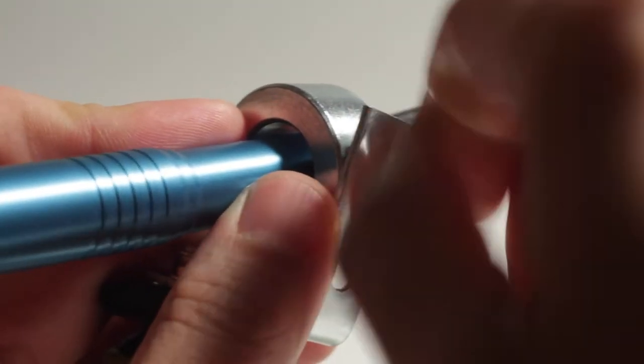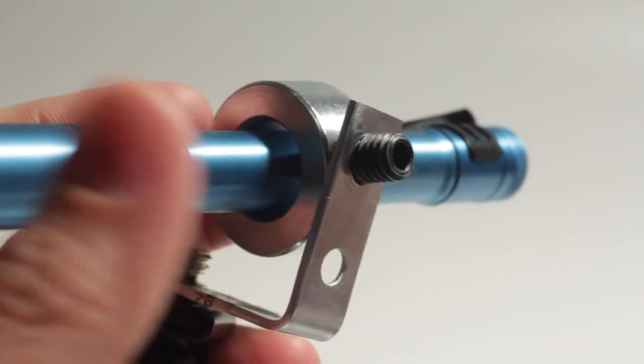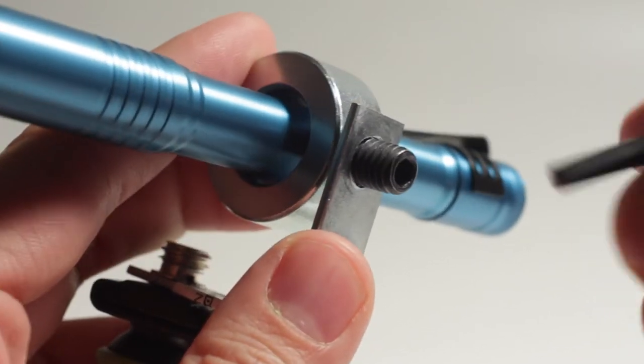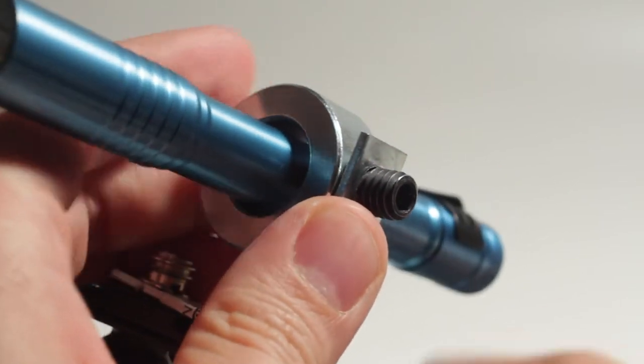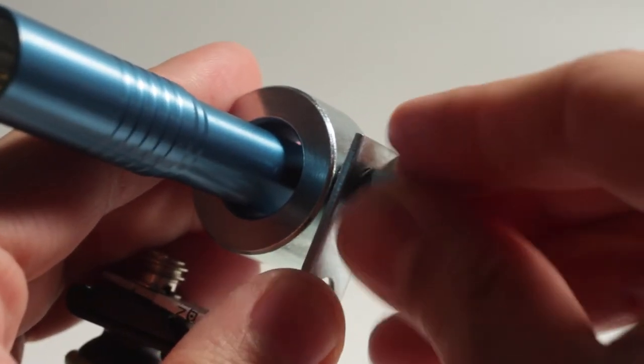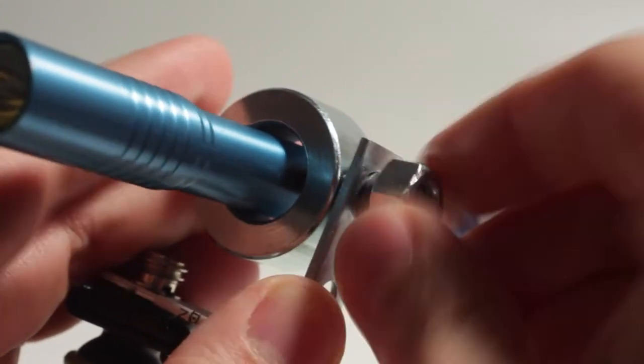Then placing your flashlight into the collar and then tightening it with the hex screw. Then you're going to get that bolt right there and just bolt it on.